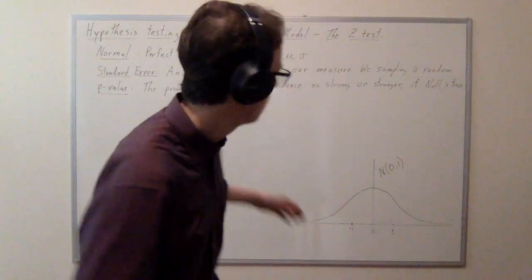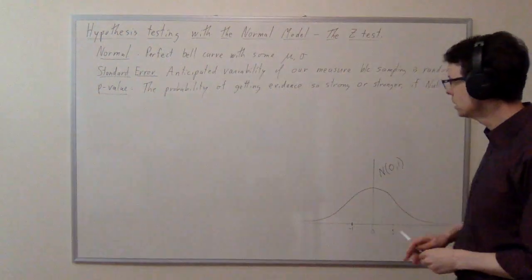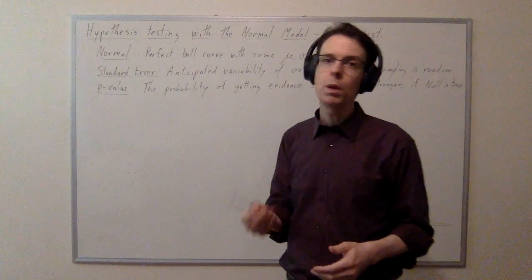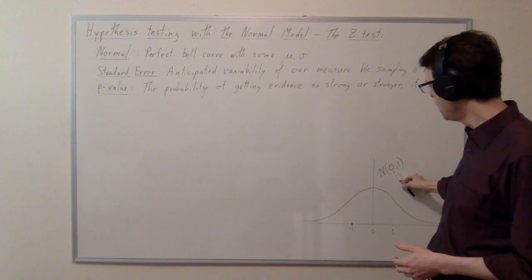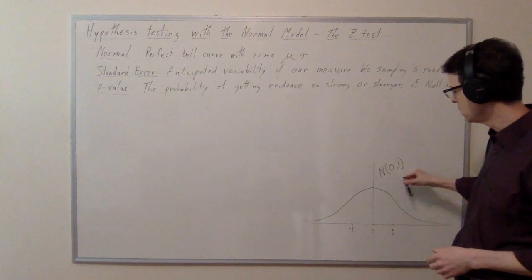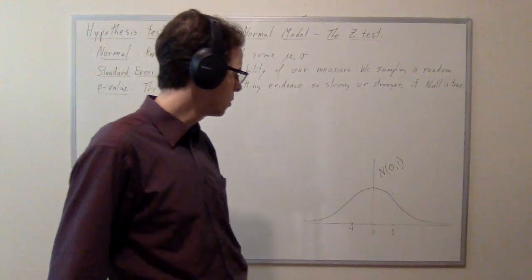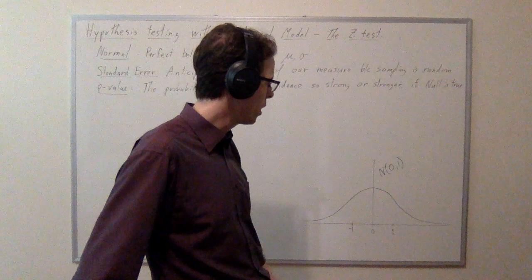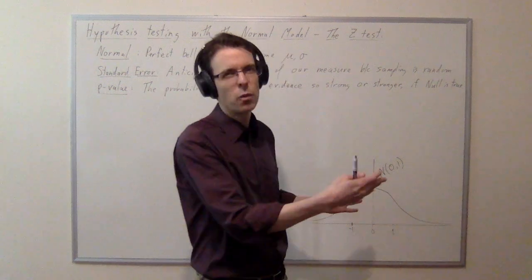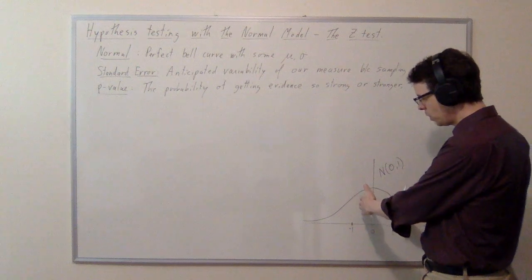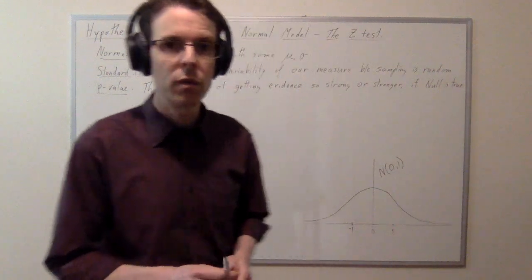Let me remind you about some stuff you already know. The normal distribution is a perfect bell curve. You can have a normal distribution with any given mean and standard deviation. The simplest one is the normal bell curve with a mean of zero and a standard deviation of one — that's N(0,1). For this curve, 68% of the distribution lies within one standard deviation of the mean, 95% lies within two, and 99.7% lies within three standard deviations.